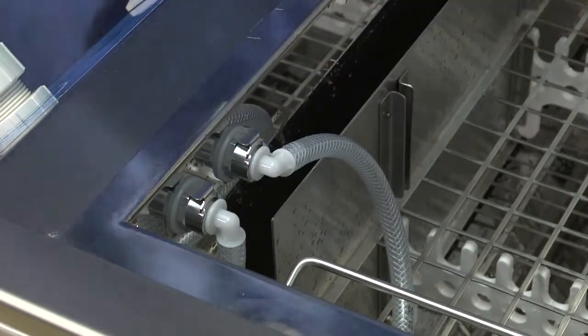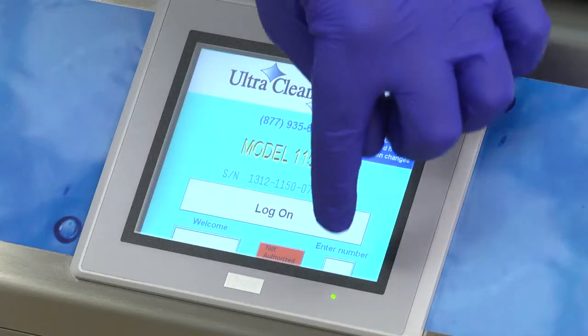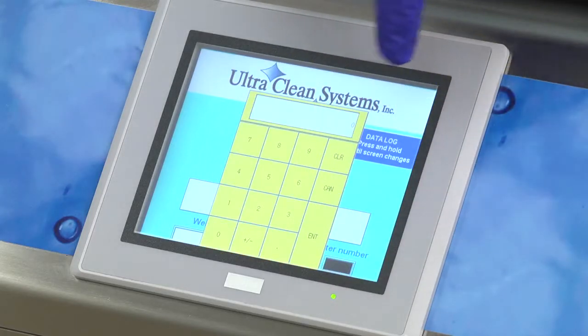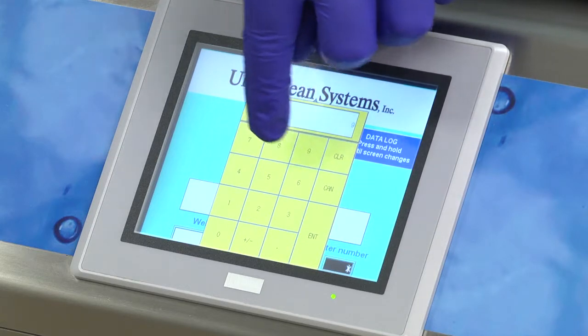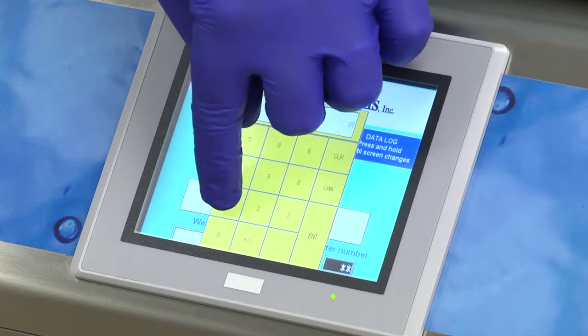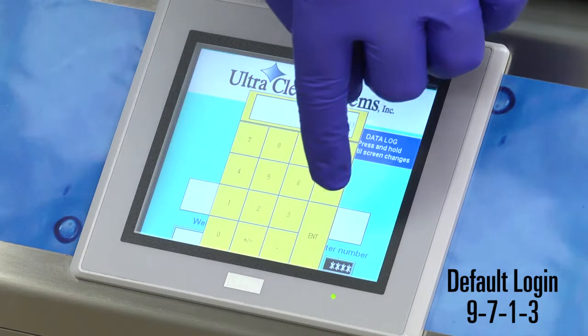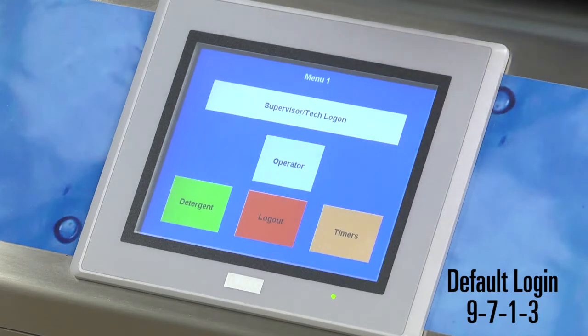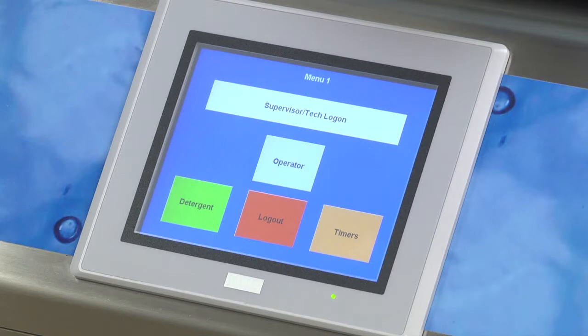Once both baskets are loaded properly, close the lid. To log into your system, press the enter number box on the screen. A number pad will be displayed where you should enter your identification login code and press enter. The default login code is 9713. This will bring up the menu one screen.